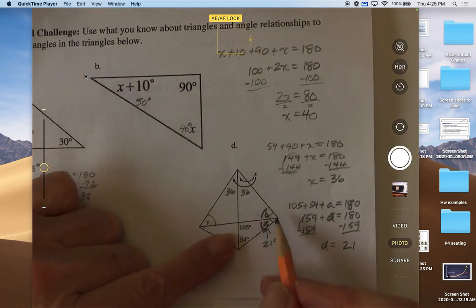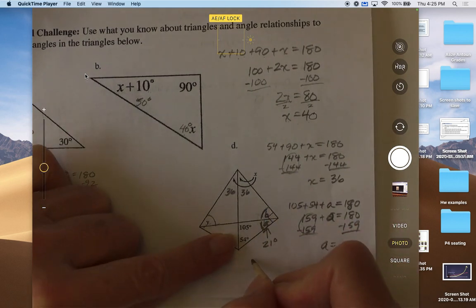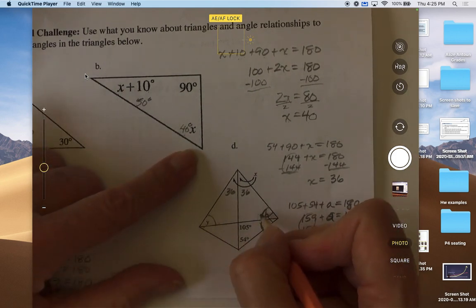Then we know that 21 plus b is equal to 90 degrees, because this is a right triangle. They are complementary angles.